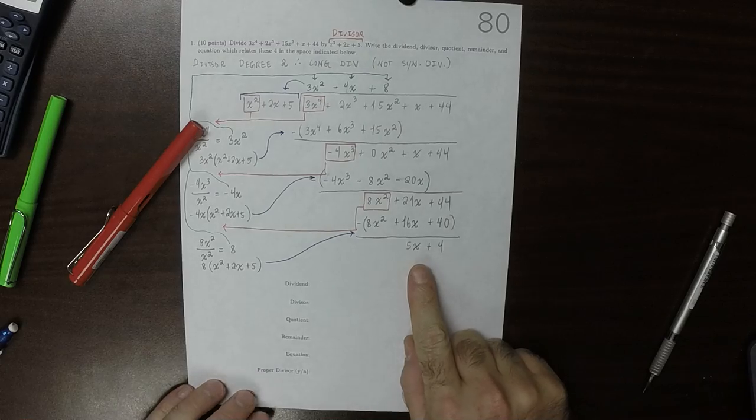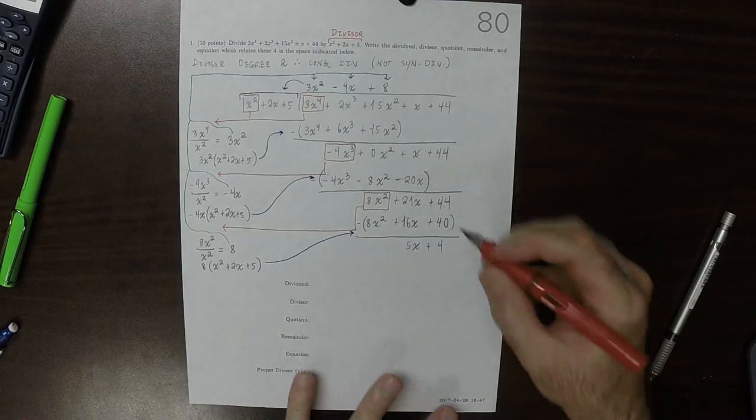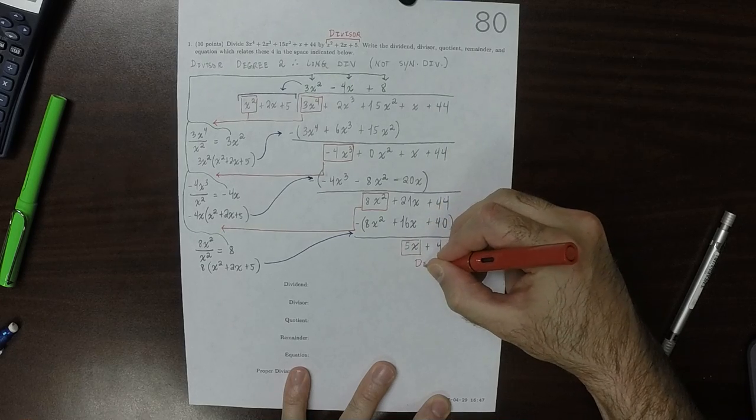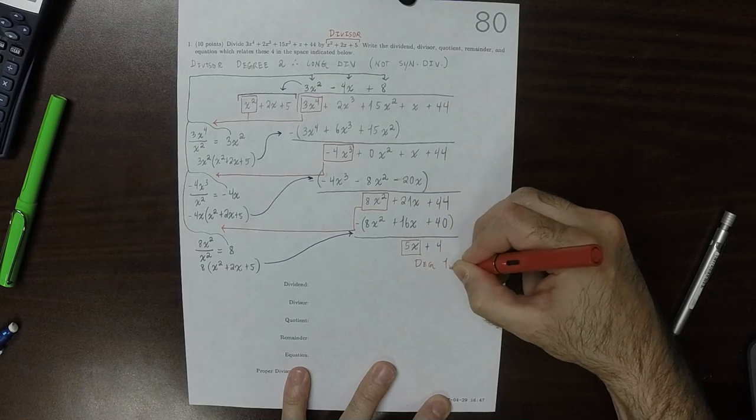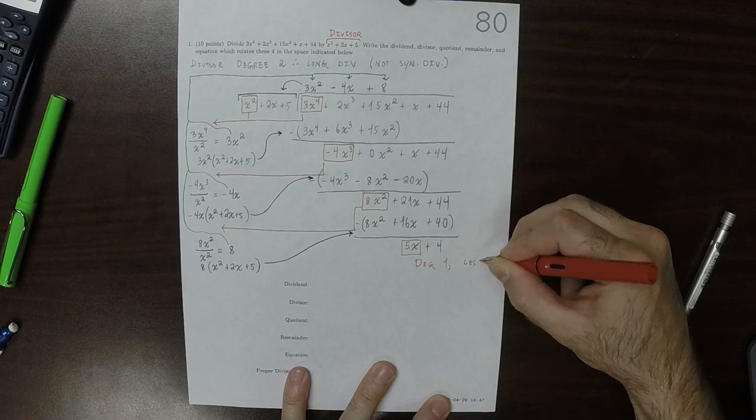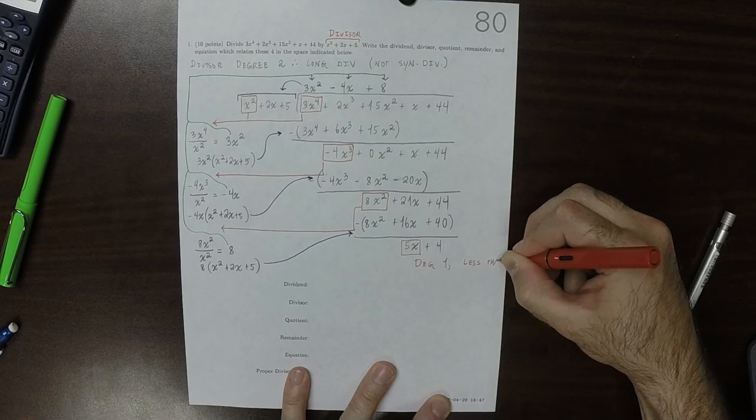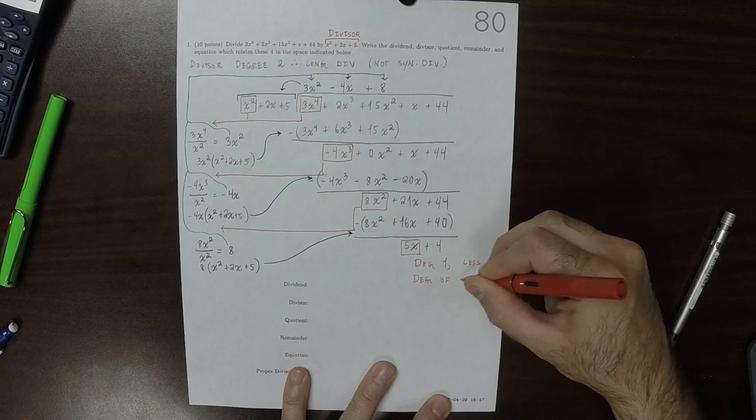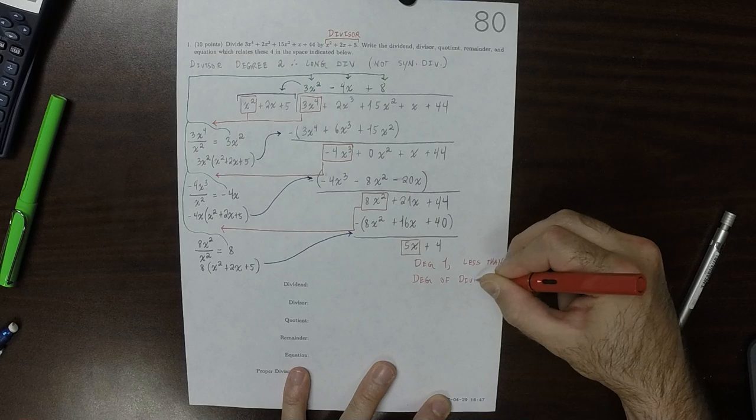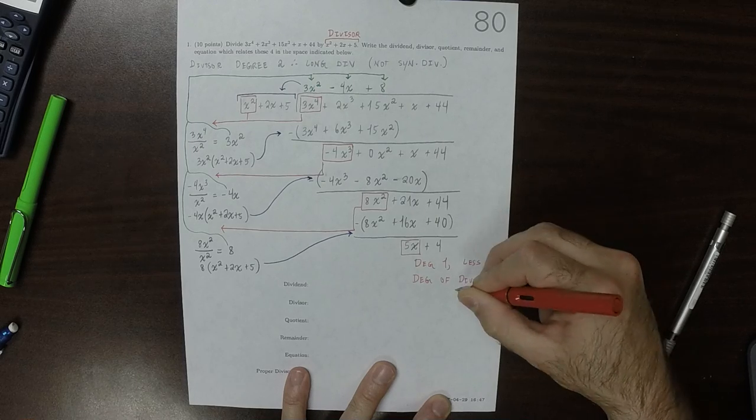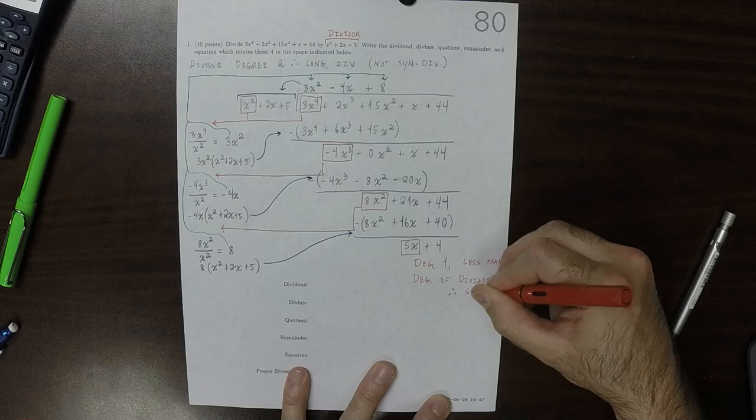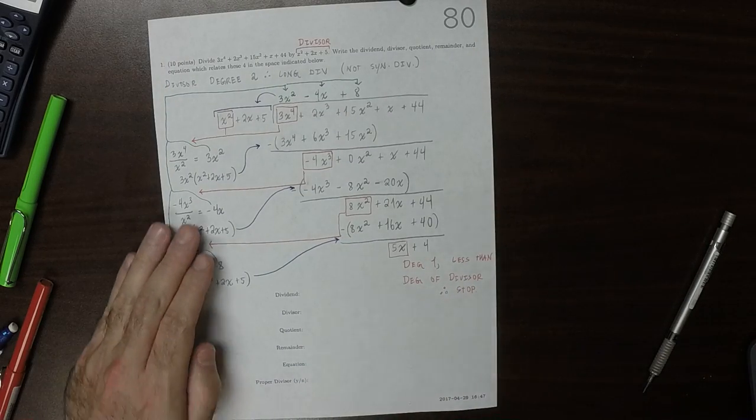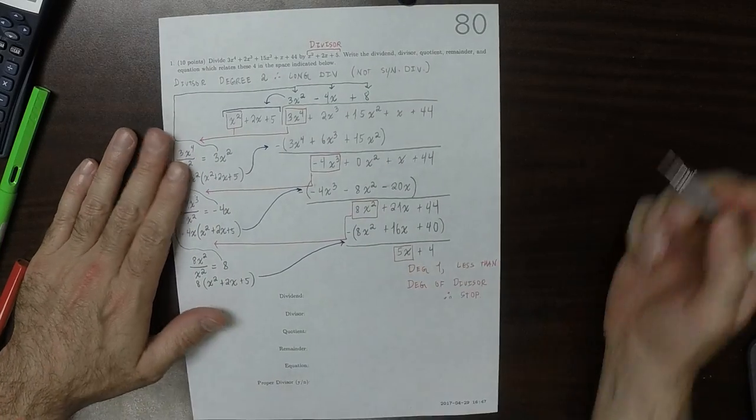So now this has degree 1, which is less than the degree of the divisor. Therefore this is where we stop the division. Now we can list out all of these.